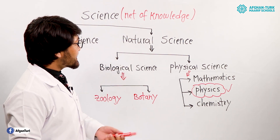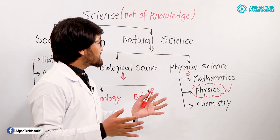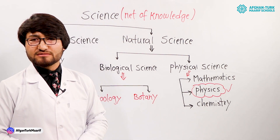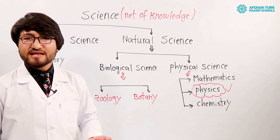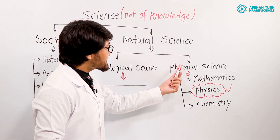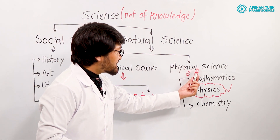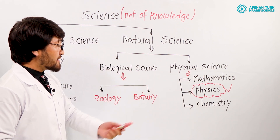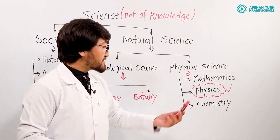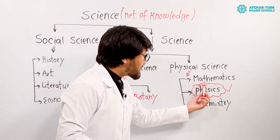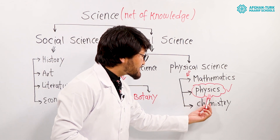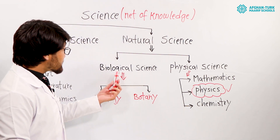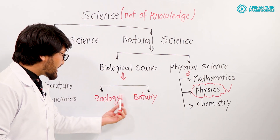Natural science means the study of nature. Natural science is divided in two parts: physical science and biological science. Physical science includes mathematics, physics, and chemistry — subjects you study in school. Biological science includes botany and zoology. Botany is the study of plants; zoology is the study of animals.